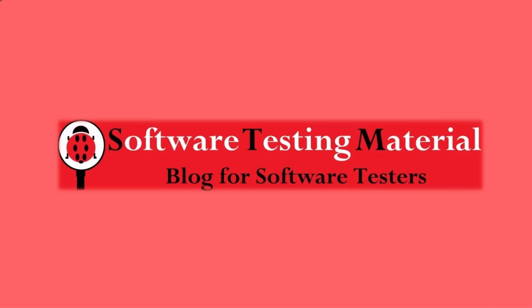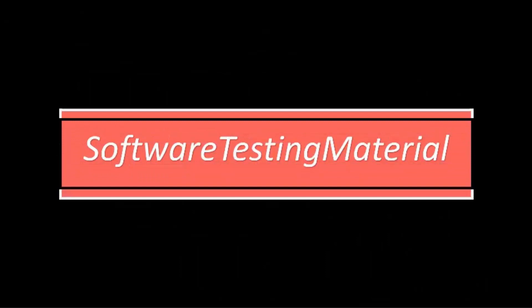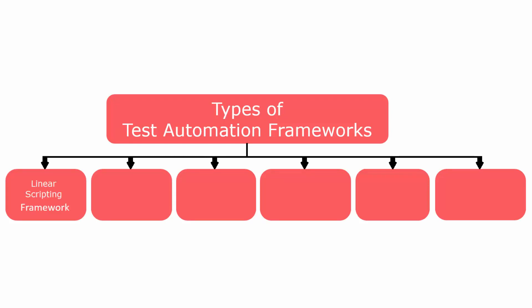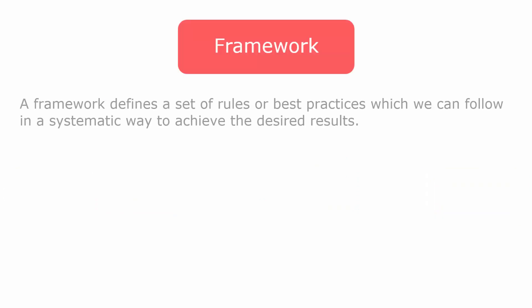Hi friends, this is Suma from softwaretestingmaterial.com. In this video we are going to see types of test automation frameworks. Some of the most popular are: linear scripting framework, modular testing framework, data-driven testing framework, keyword-driven testing framework, hybrid testing framework, and behavior-driven development framework. A framework defines a set of rules or best practices which we can follow in a systematic way to achieve the desired results.